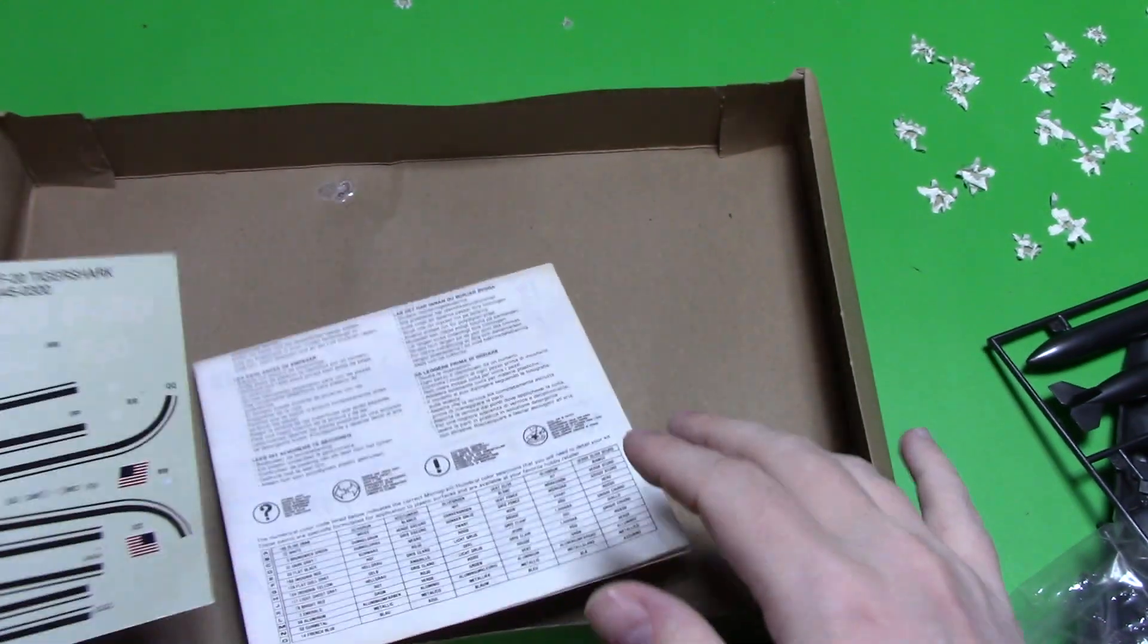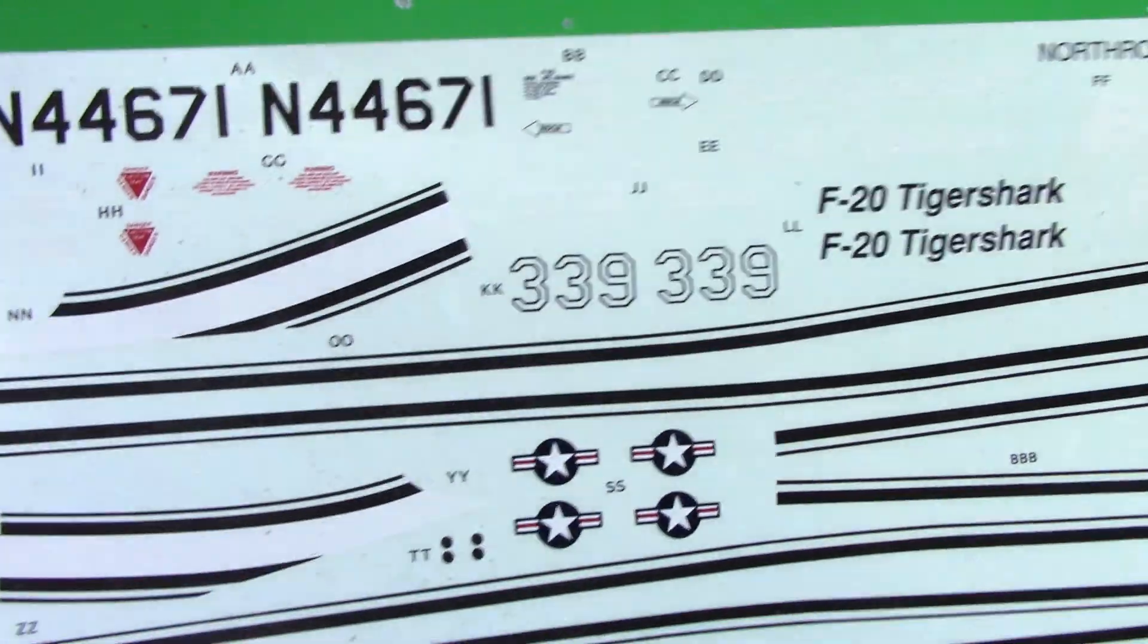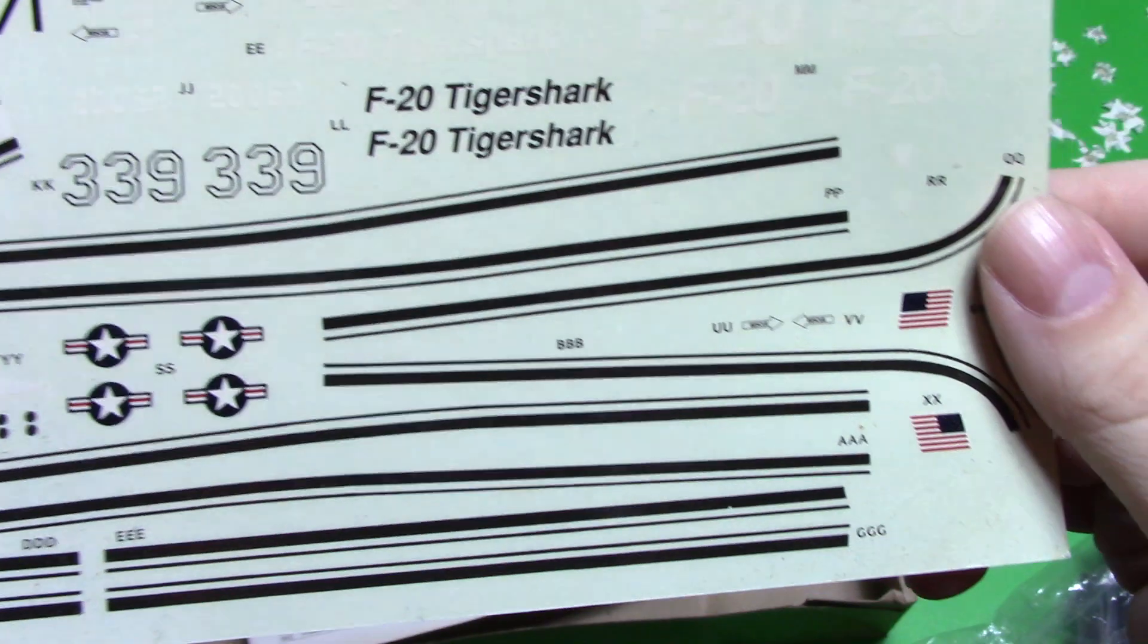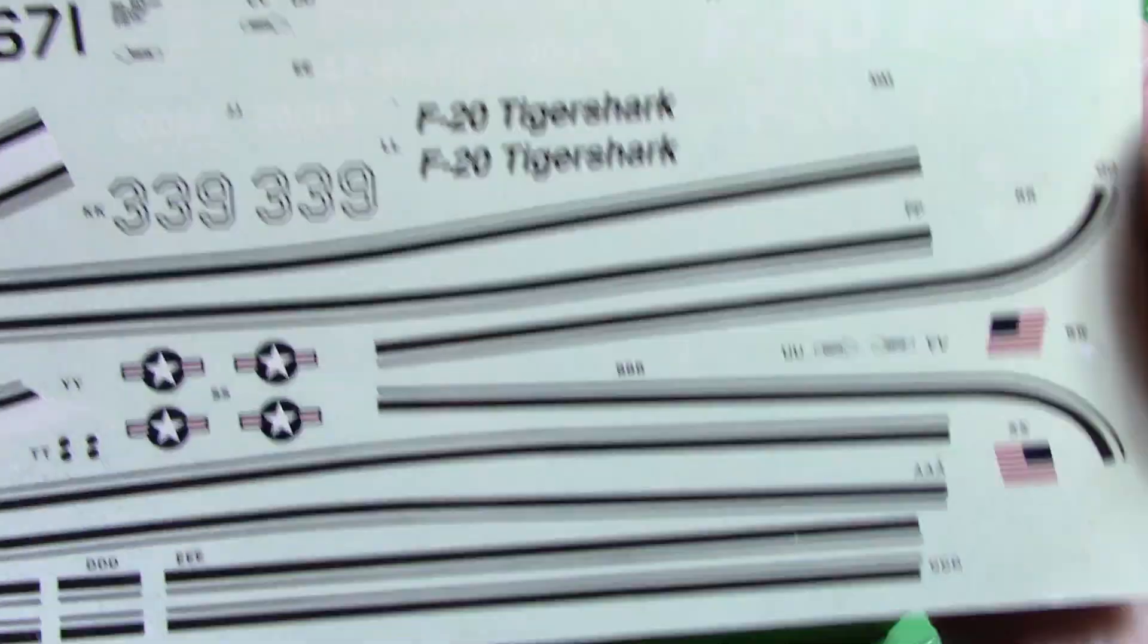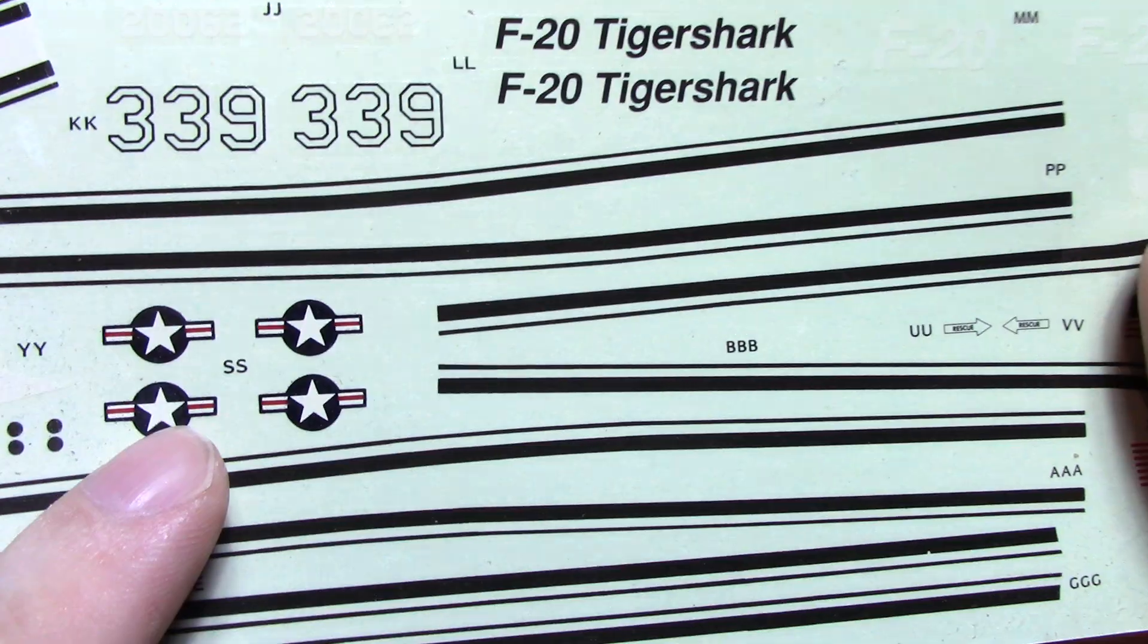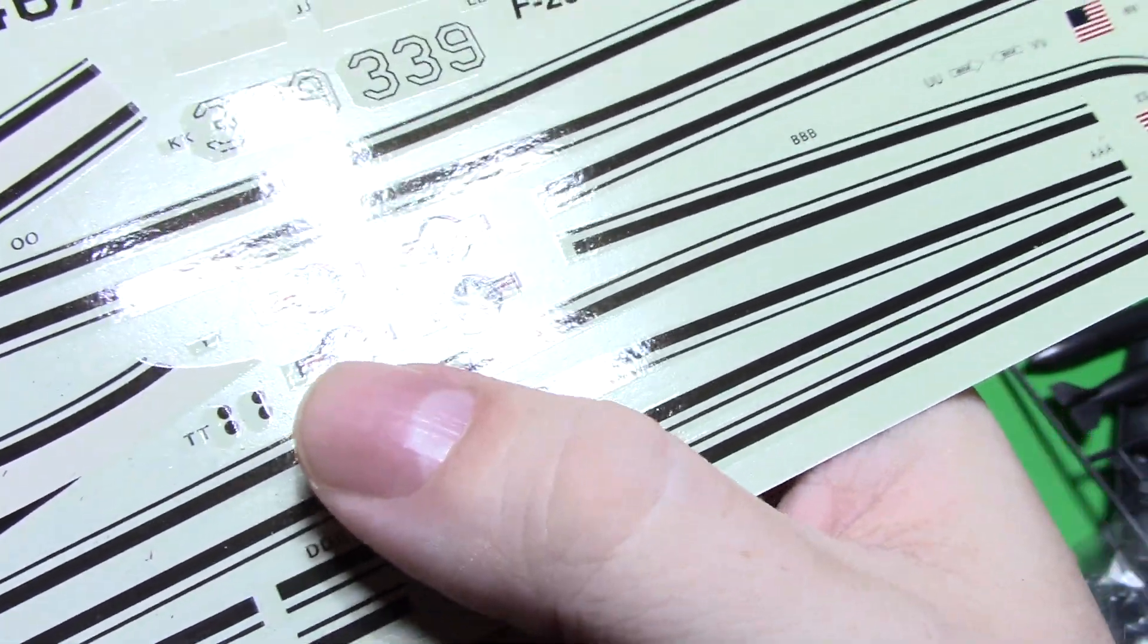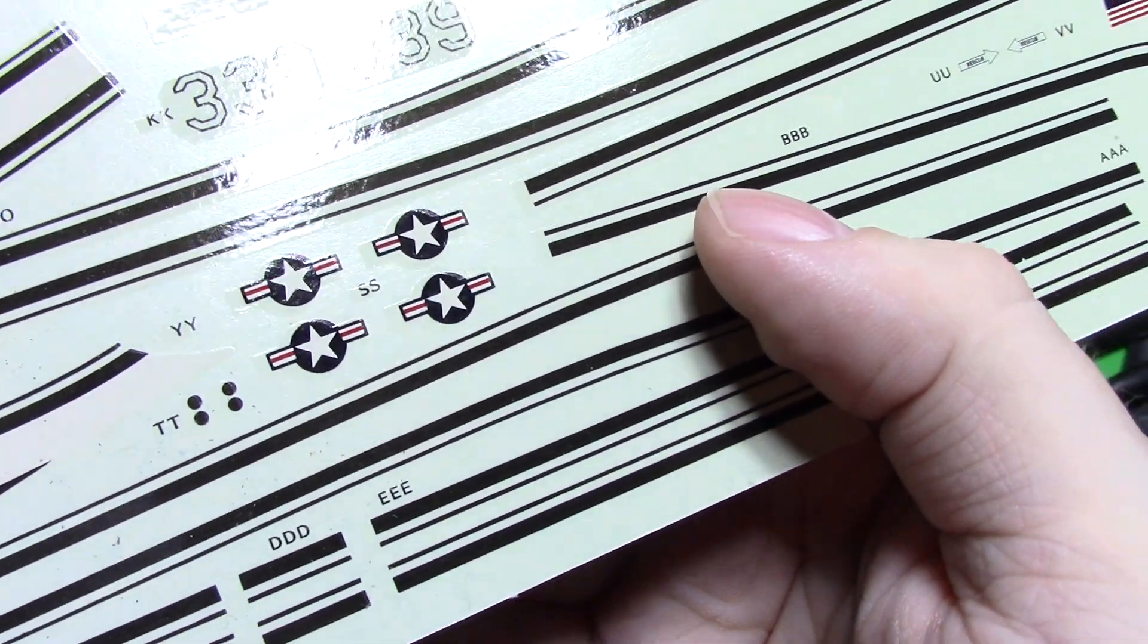I guess we'll show the decals here. They're pretty old. You might still be able to use them because of how thick they are. But you know, they look alright. I mean, what can you really do? Although these, you can see the carrier film is actually off of them. I'm not sure if I can get it to show in the light. The carrier film is actually away from the actual decal, which could pose a problem there.